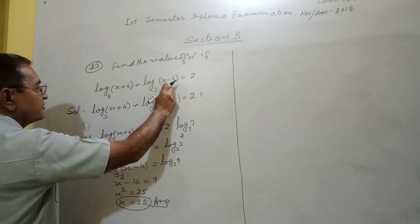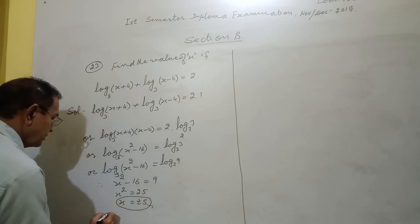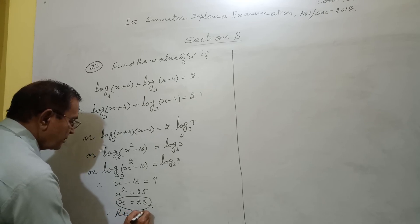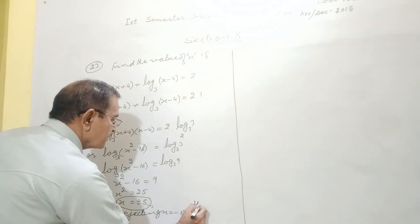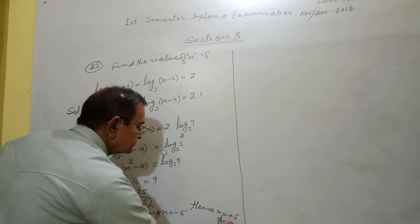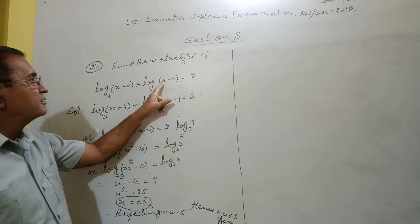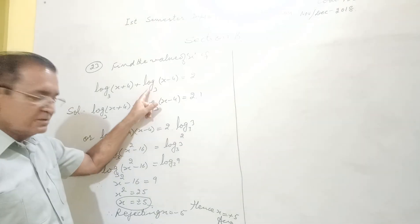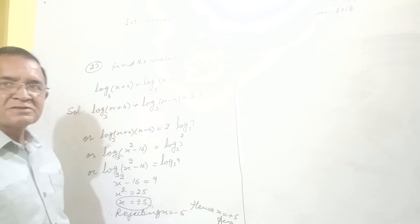Log of a negative number is not possible. Therefore, rejecting x equals minus 5. So hence, x equals plus 5 results. When we put minus 5 in this equation, when I put for x minus 5, I will get minus 5 minus 4, minus 9. Log of a negative number is not possible. So thus, we are supposed to neglect x equals minus 5. And hence, answer will be x equals 5.